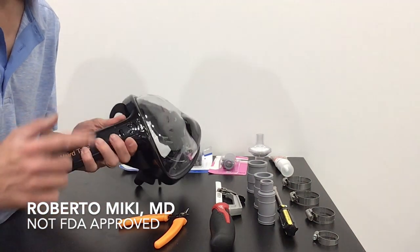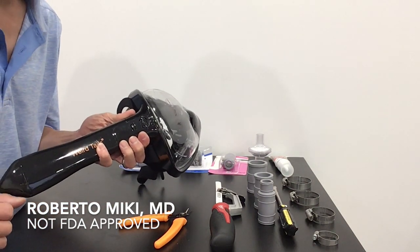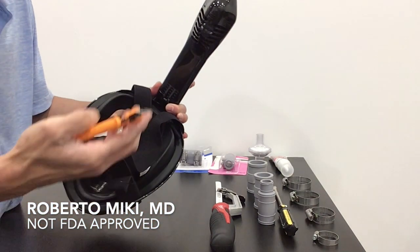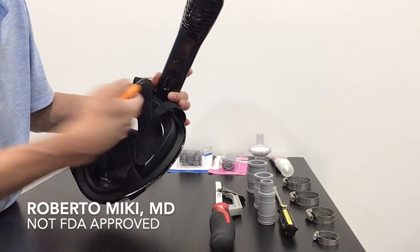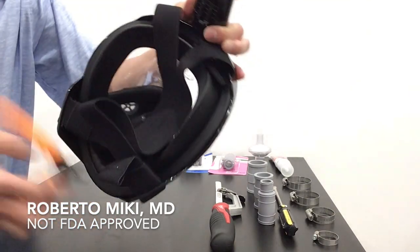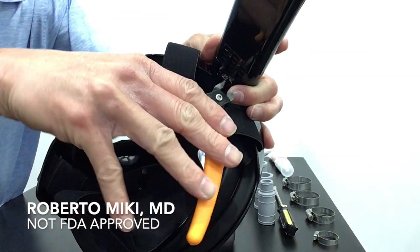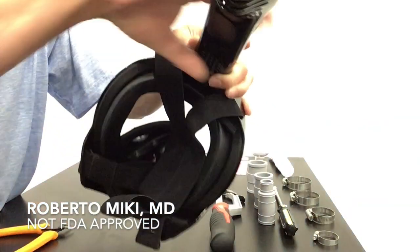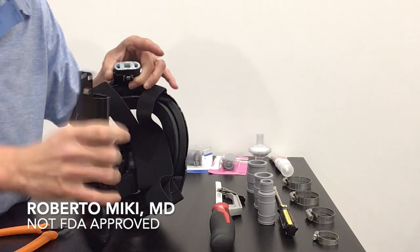So the first step is you want to take this snorkel off. The snorkel does normally detach but it hinges right here. So the first step is to take a pair of clippers, clip the snorkel right here, right below the hinge. You can go snip snip and then the snorkel will come off like that.